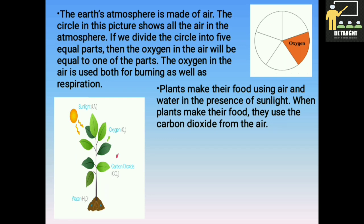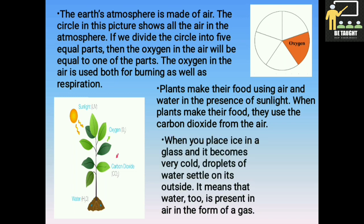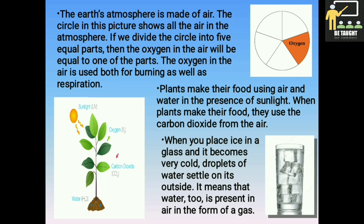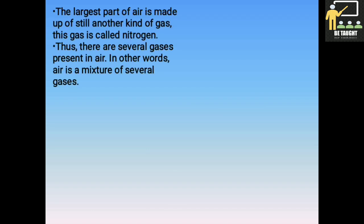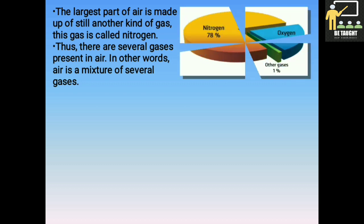You have also learned that plants make their food using air and water in the presence of sunlight. When plants make their food, they use the carbon dioxide from the air. When you place ice in a glass and it becomes very cold, droplets of water settle on its outside. It means that water too is present in air in the form of a gas. However, the largest part of air is made up of still another kind of gas. This gas is called nitrogen. Thus, there are several gases present in air. In other words, air is a mixture of several gases, as you can see in the picture.